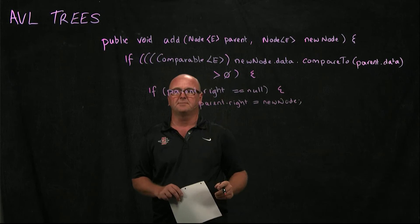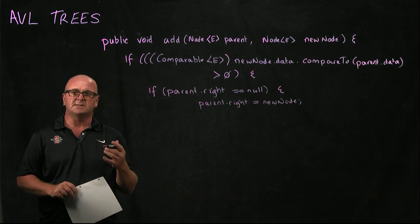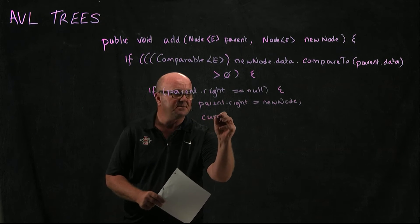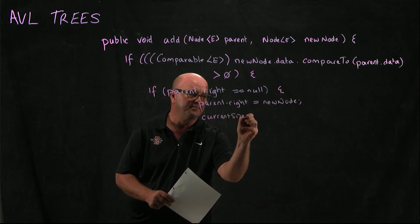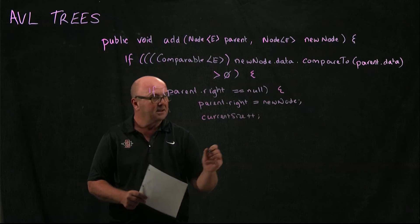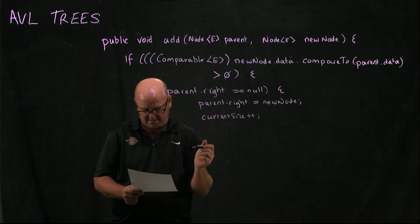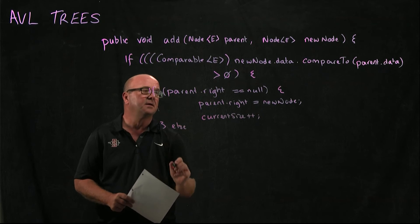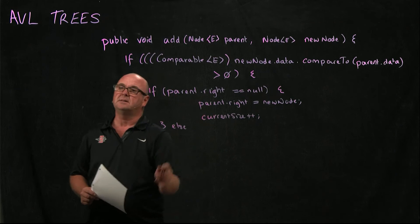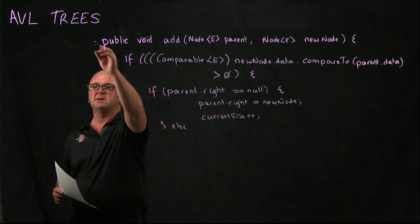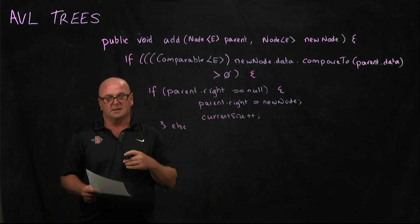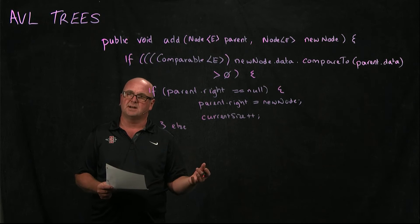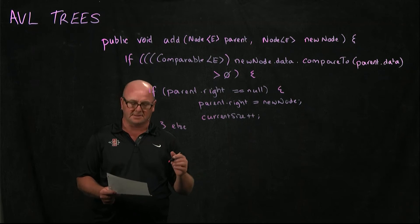Now we've got this pointer from parent.right pointing to our new node. And currentSize gets incremented, and we're good. If parent.right is not null, then what we need to do is go back to our recursive method, and check and see whether parent.right is bigger or smaller than the thing we're trying to add. And then we go back through that system again.